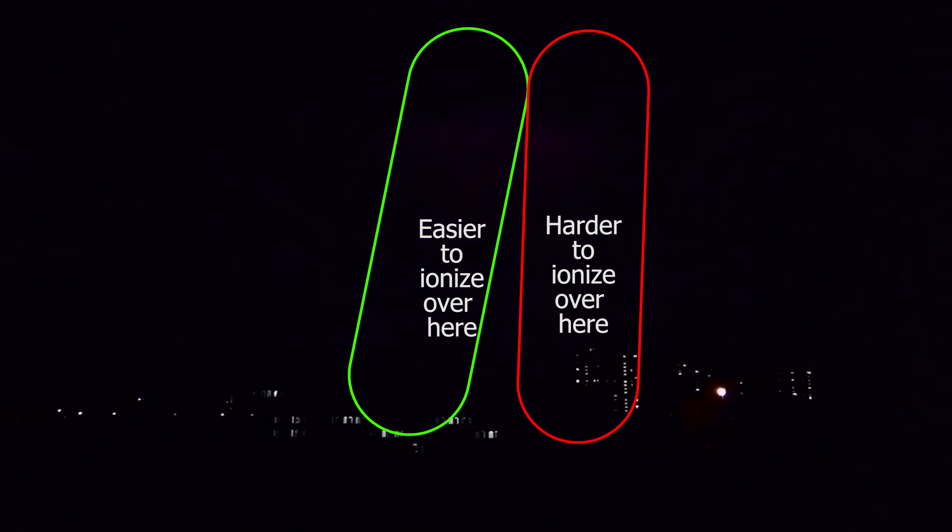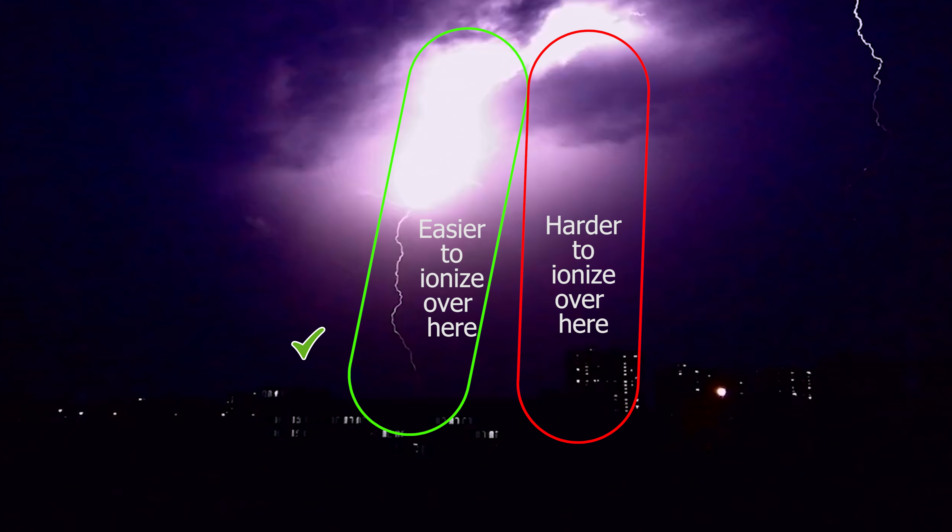This is the same thing that's happening in lightning strikes as well. The lightning is taking the path in which it was easiest to ionize. Now this ease of ionization depends on a lot of things. You saw it depended on whether I was around glass or not. It also depends on how much water is in the air. It can even depend on how much dust or particles there are in the air.